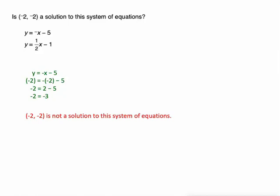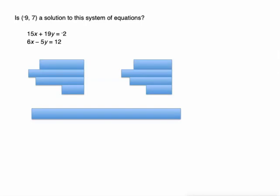Example number 3: Is (-9, 7) a solution to this system of equations? All right, well here's my first equation. I'm going to substitute in -9 for x and 7 for y. I've got to multiply a couple times. 15 times -9 is -135.